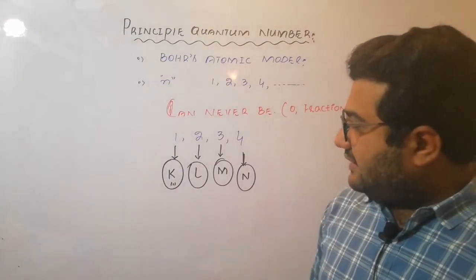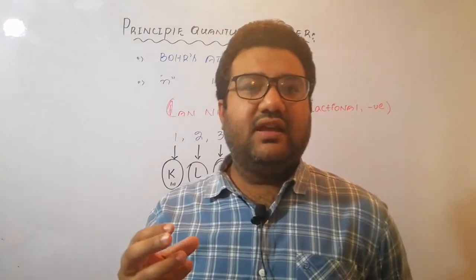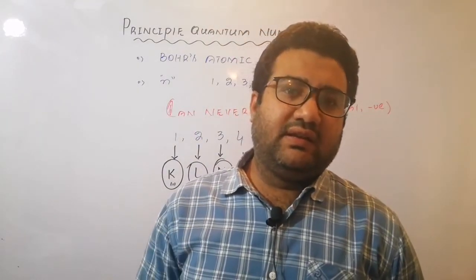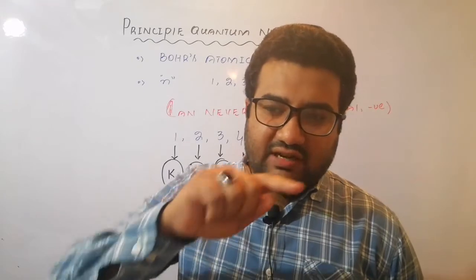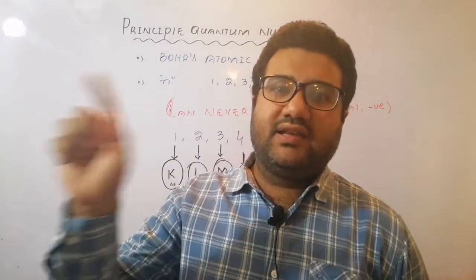Why is it started from K? Because in Greek, the nucleus is called Keryon. So the shell which is nearest to the Keryon is called the K shell.